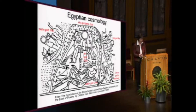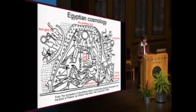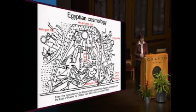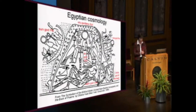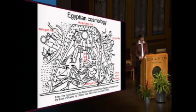The primary message to the ancient Hebrews wasn't about the how and the when — it was about the who and why of creation: that Israel's god is the sovereign creator of all, and humans are very good, made in his image. If God's purposes in Genesis 1 didn't include teaching scientific information to the Israelites, such as that the sky isn't solid, then we too shouldn't look there for scientific information about the age of the earth or the formation of species.